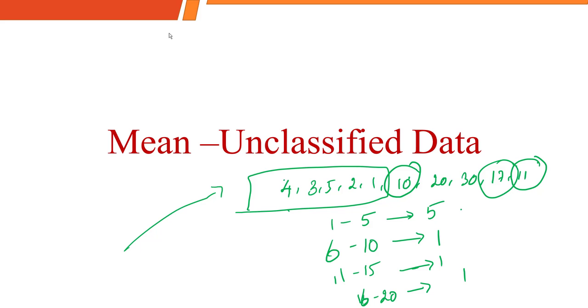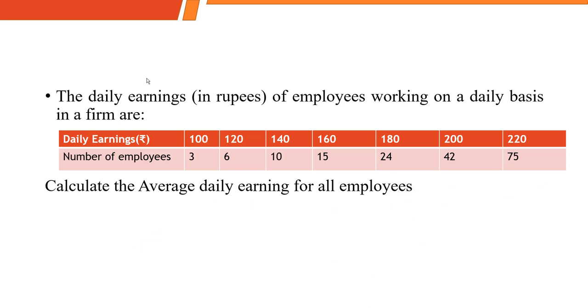Let's do a sum on unclassified data. The daily earnings of employees working on a daily basis are given below. They are asking us to calculate the average daily earnings for all employees. The earnings range from 100 to 220, and the number of people ranges up to 75.